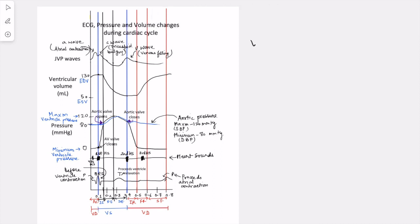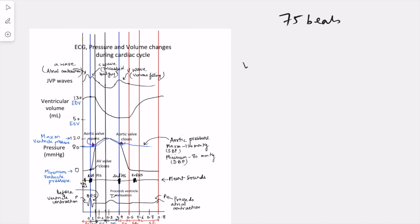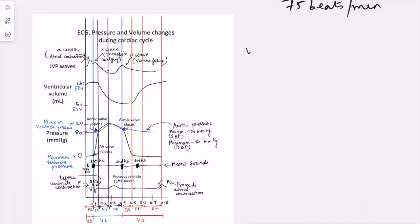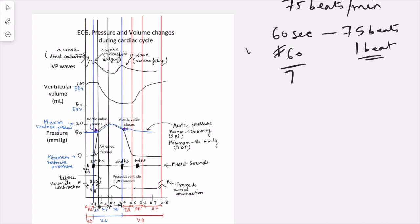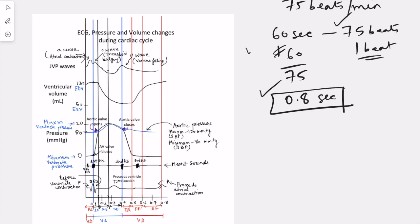Let us see what the mechanical events are and the timeline in which they are occurring. First is atrial contraction because of the P wave. If the heart rate is 75 beats per minute, the duration of one heartbeat will be 60 divided by 75, which comes to 0.8 seconds. So taking the heart rate as 75 beats per minute, the duration of a single cardiac cycle will be 0.8 seconds.